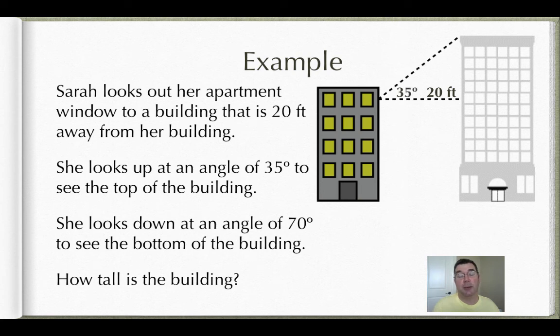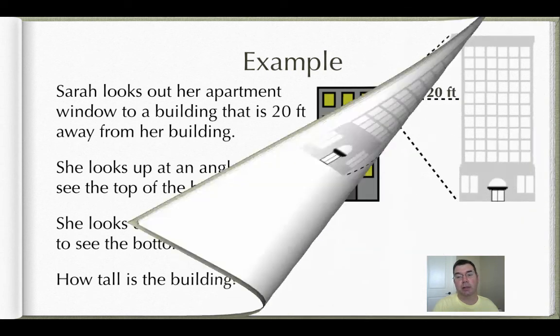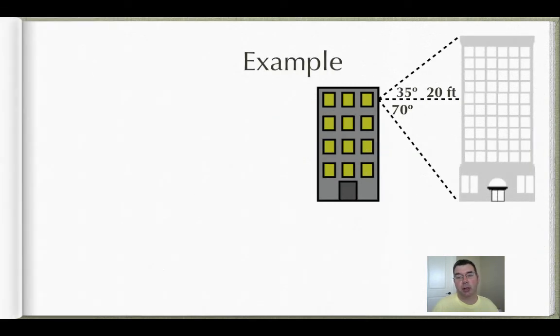If she looks up, that's a 35 degree angle, and if she looks down, that's a 70 degree angle. So I can see where the two right triangles are. They're stacked on top of each other. They have a common side that's 20 feet, and I need the opposites of those triangles. So looking at that, I have the adjacent for both triangles is 20, and I need to find the opposite of each triangle and add them together to get the total height.